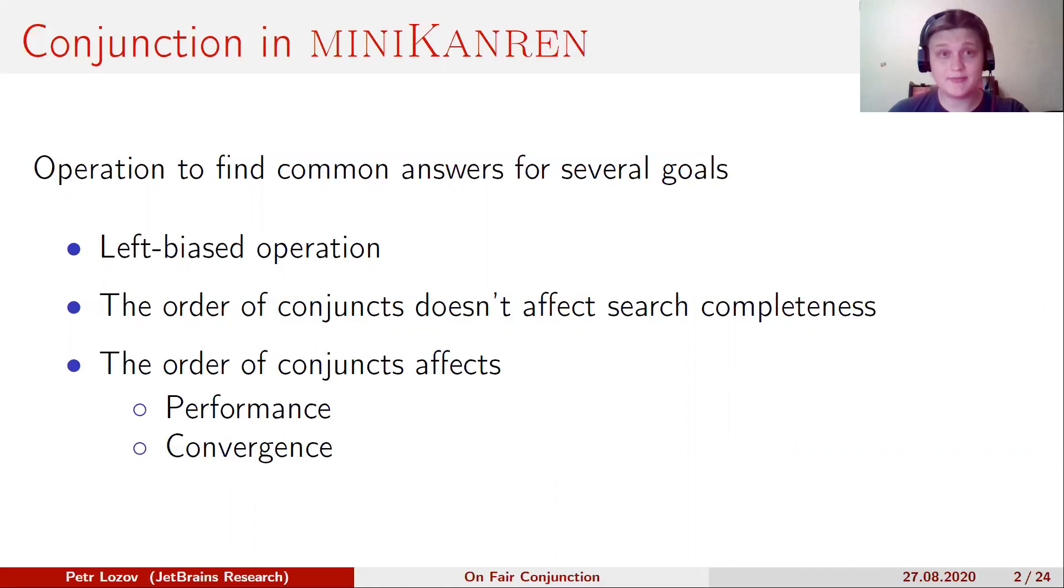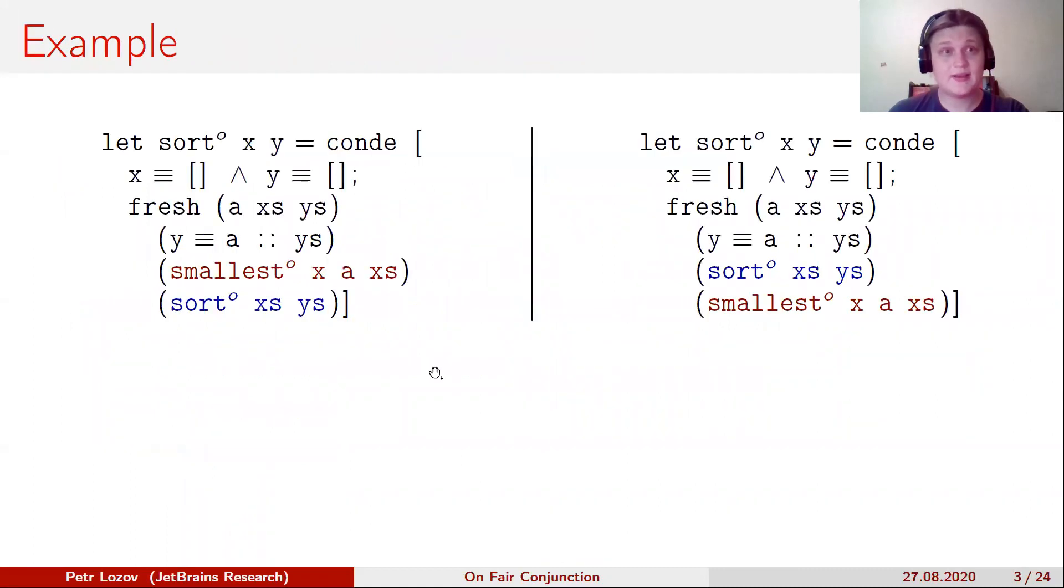Let's consider an example. This is a list sorting relation. As you can see, we have two relation calls in the second branch of candy: smallest and sort.